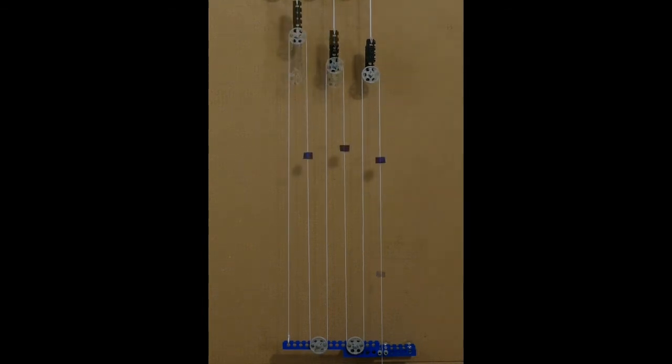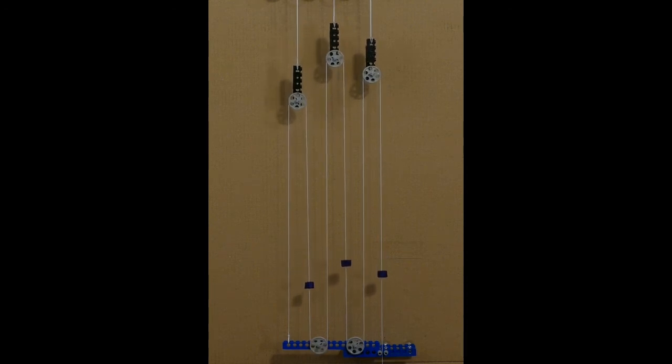Now you're probably wondering what happens to the other parts of the wire so I've added markers to those. Now if you have a look at the left one, that is simply following the movement of the leftmost pulley at double the amplitude.